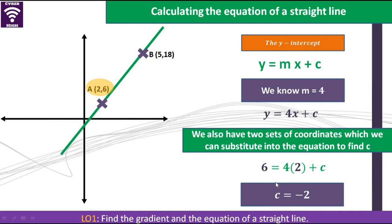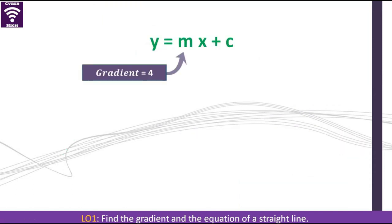It gives us the final value of c as negative 2. Remember, 4 times 2 is 8. So we subtract 8 both sides. We will get 6 minus 8, it gives us negative 2. That's an important skill about linear equations. So our final equation, then we are going to substitute our gradient, which is 4, and then our y-intercept is negative 2 to give a final expression that looks like that. y is equal to 4x minus 2.